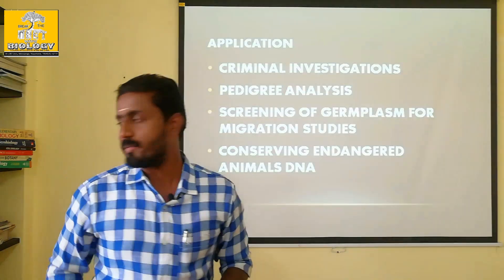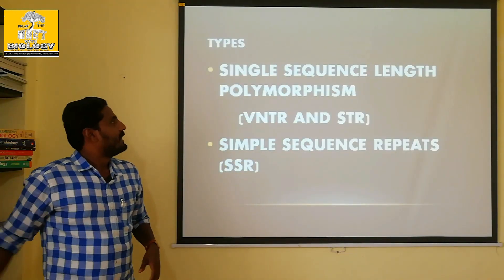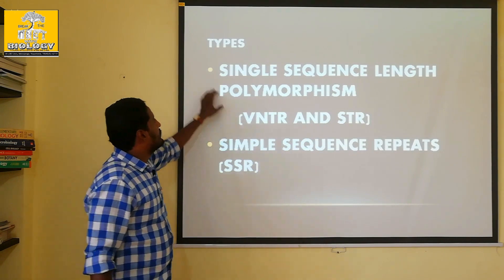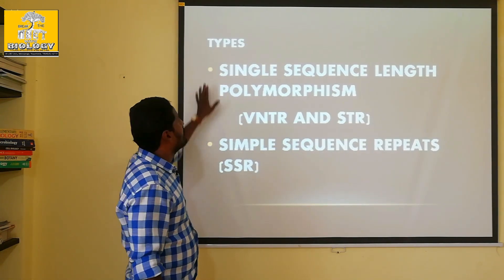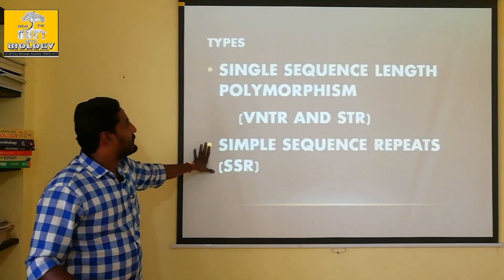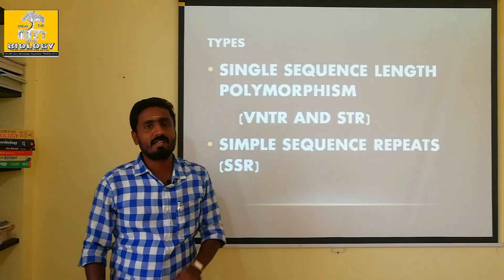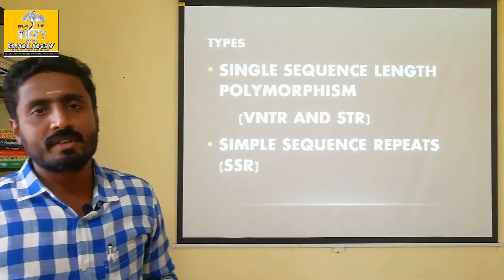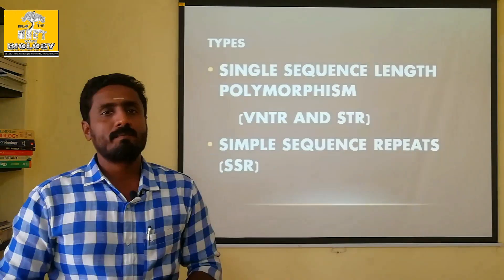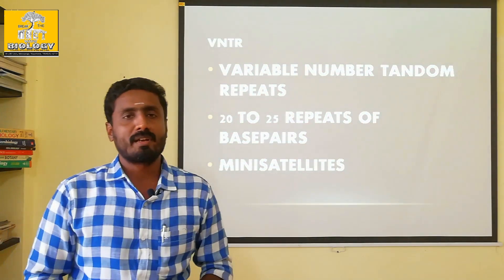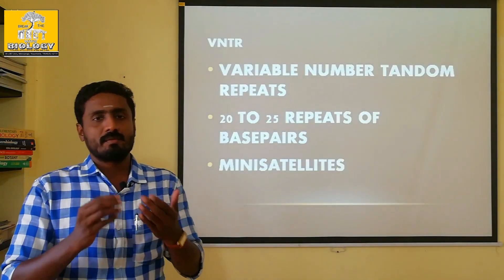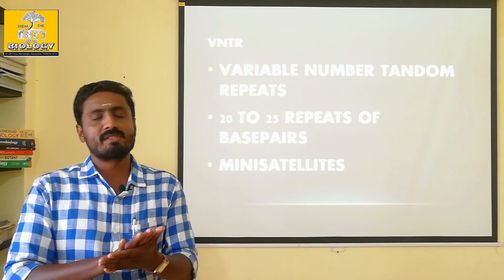We have two types: VNTR and STR. VNTR stands for Variable Number Tandem Repeats. There is also Single Sequence Length Polymorphism and Simple Sequence Repeats. VNTR is one type described in the State Board Book. We have DNA Fingerprinting based on these. In a DNA sequence, the AT sequence and CT sequence are repeated.